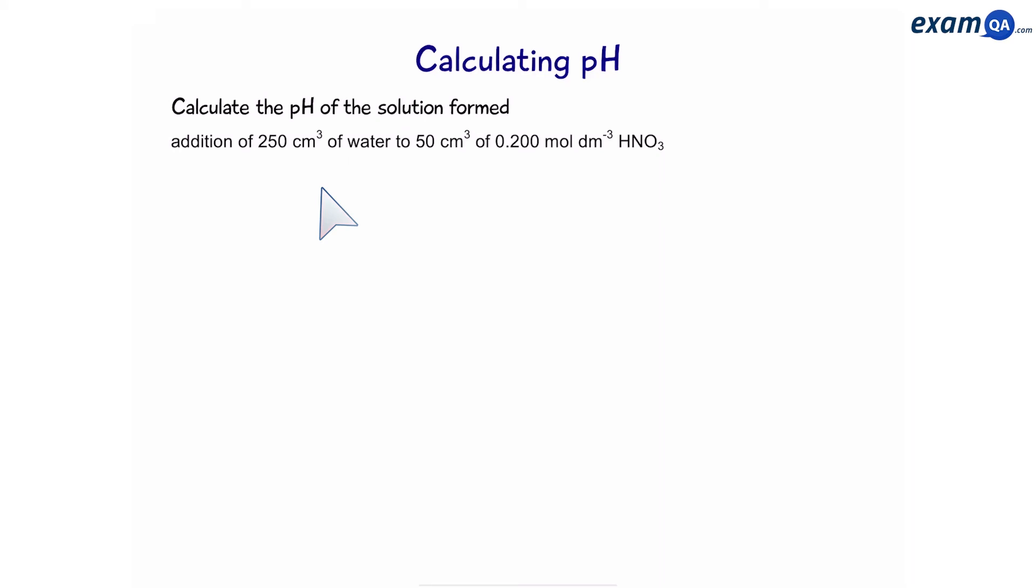Okay, here's another style of question. This one involves diluting. Calculate the pH of the solution formed when you add 250 cm³ of water to 50 cm³ of a 0.2 molar solution of nitric acid.